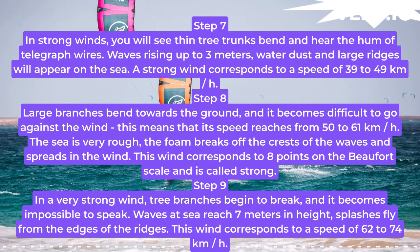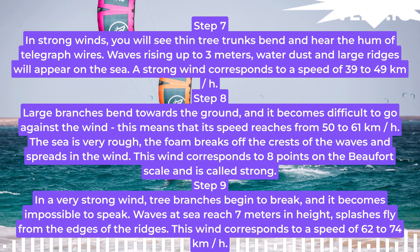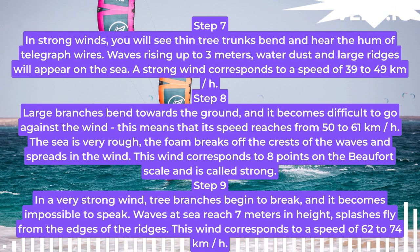Step 7. In strong winds, you will see thin tree trunks bend and hear the hum of telegraph wires. Waves rising up to 3 m, water dust and large ridges will appear on the sea. A strong wind corresponds to a speed of 39 to 49 km/h.